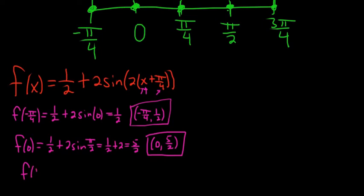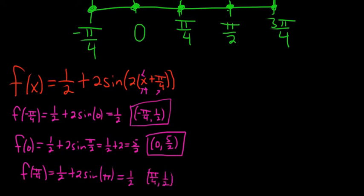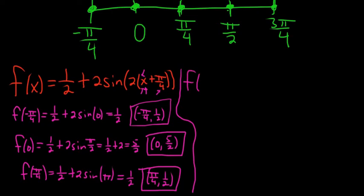Let's look at f(π/4). So f(π/4) is 1/2 plus 2 sine of 2·(π/4 + π/4). We get π/4 plus π/4 equals 2π/4, which is π/2, times 2 is π. So we get sine of π. Sine of π is 0 — it's the y-coordinate at π, which is 0. So this is going to be 1/2. The ordered pair is (π/4, 1/2). Notice all the angles are easy: 0, π/2, π. You're never going to get π/6 or π/3 with this method. It's always the easy angles — that's why I think this is the best method for graphing sine and cosine.